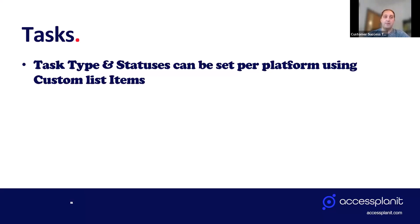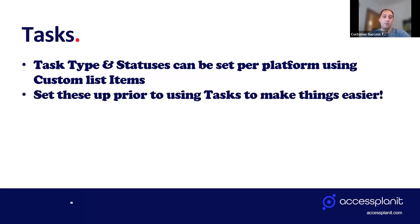Task types and statuses can use custom list items, set per platform. If you want to make sure the wording within your tasks and those actions are linked to your business processes and the language you use, you can use custom list items to set those and make them as personal to you as possible. We recommend setting these up prior to creating any tasks — it's much easier if you set them up at the very beginning.